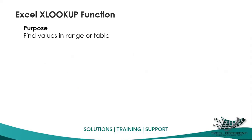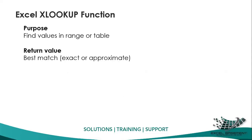The fundamental purpose of XLOOKUP is to find values in a range or table, just like traditional functions such as VLOOKUP, HLOOKUP, or INDEX MATCH. The purpose is the same. The return value can be either an exact match or an approximate match.